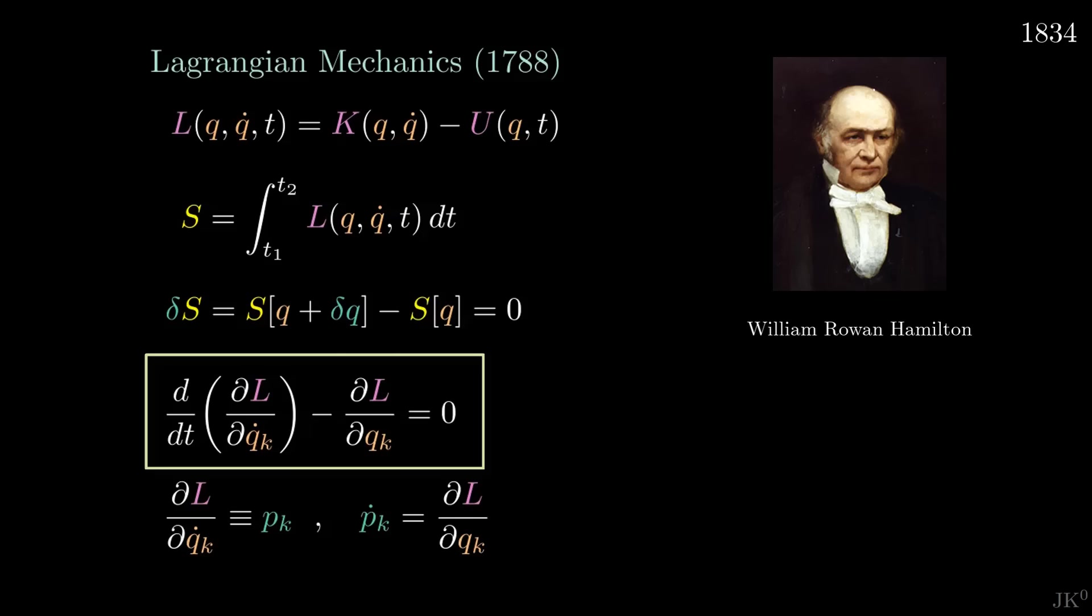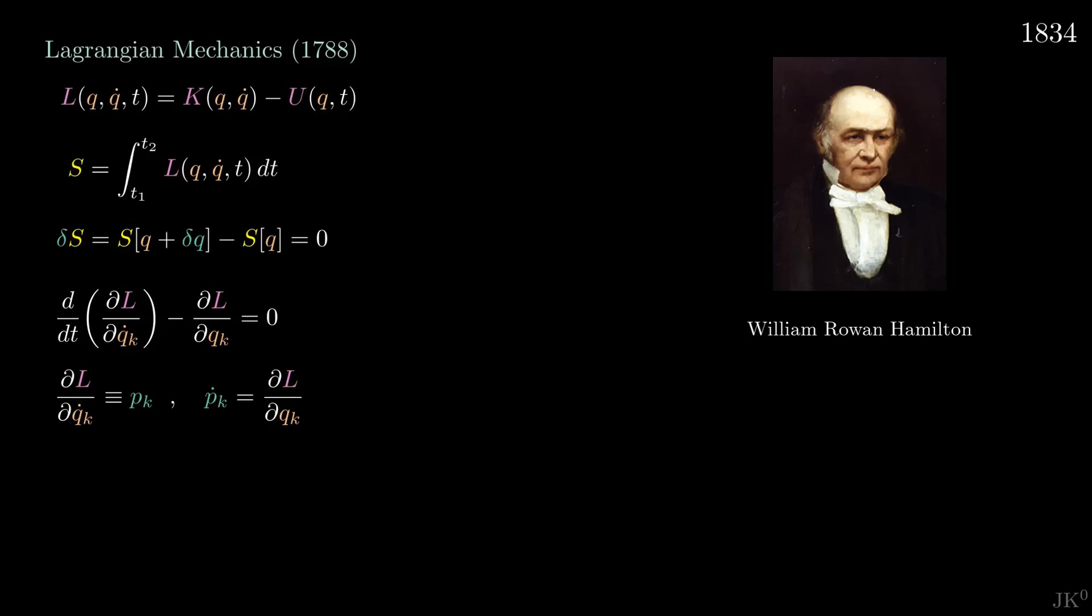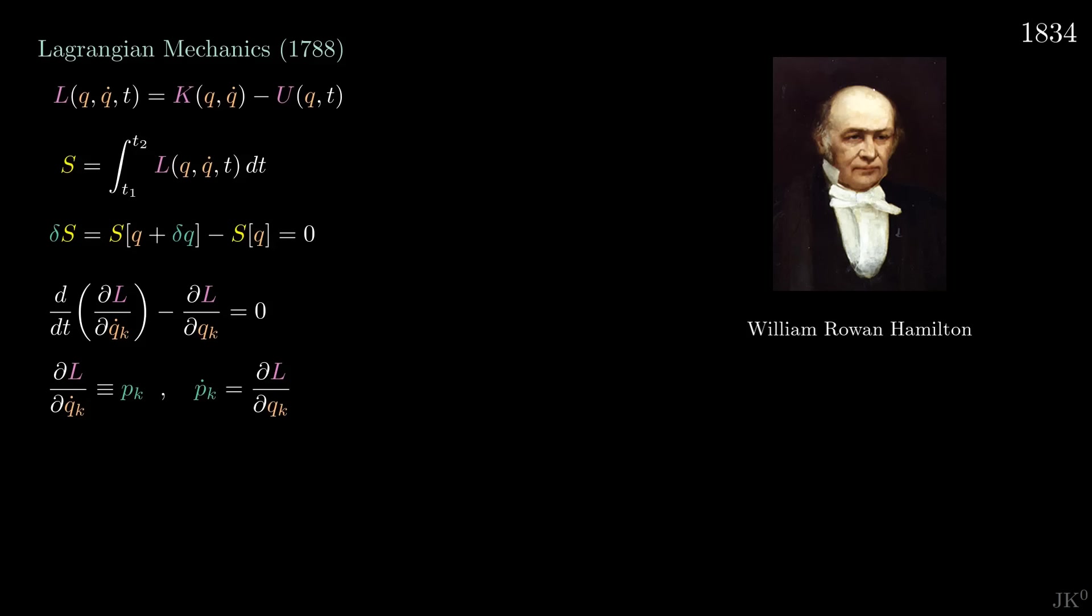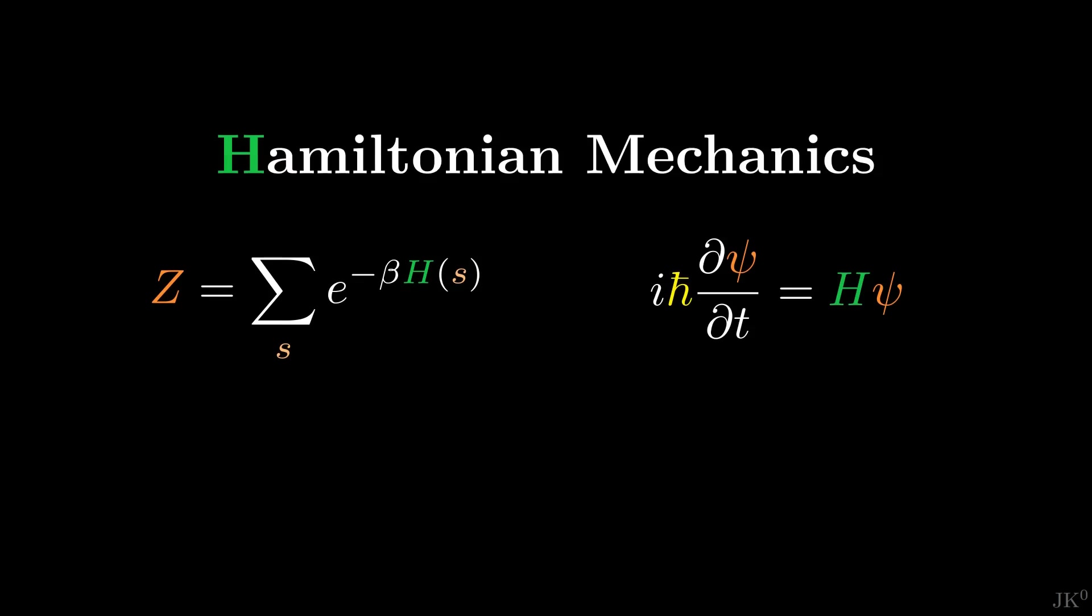Hamilton saw this and wondered if the whole formalism could be refined so that instead of one second-order equation, the evolution of the system could be characterized by two first-order equations. This would double the number of equations to solve, but also make the equations significantly simpler. Hamilton succeeded at this, and as a bonus, he paved the way for the development of modern physics.